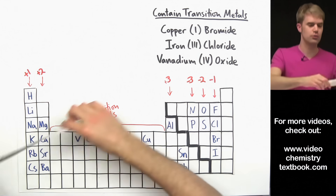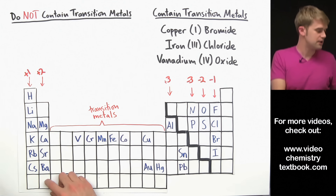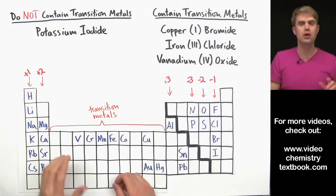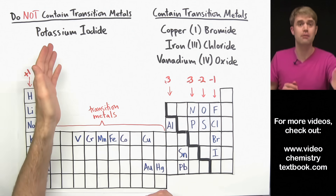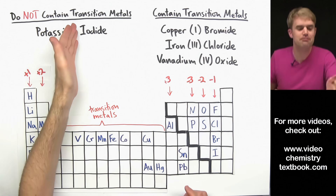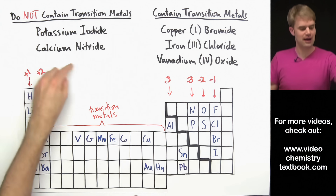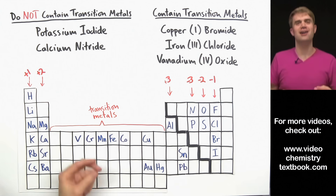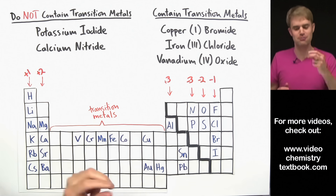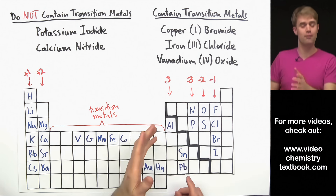On the other hand, we don't use Roman numerals when naming compounds that don't contain transition metals — for example, the metals over here. Take potassium iodide: potassium K is in the 1+ column, which means that in an ionic compound, potassium always makes an ion with a 1+ charge. That's the only choice, so we don't need a Roman numeral to specify it. Similarly, calcium is in the 2+ column and can only make a 2+ ion, so no Roman numeral is needed there either.